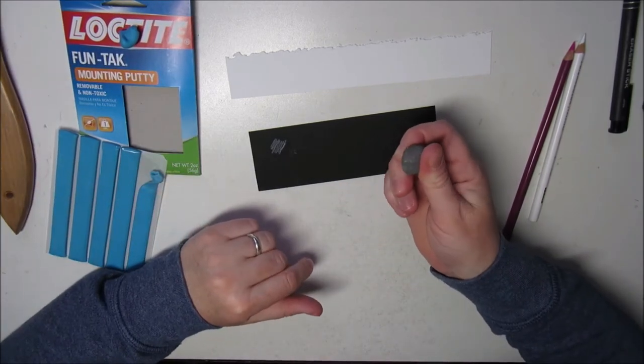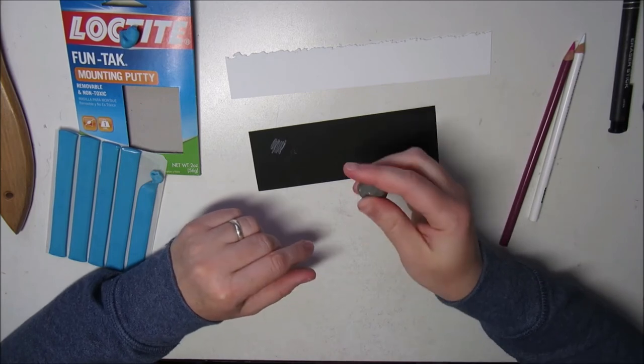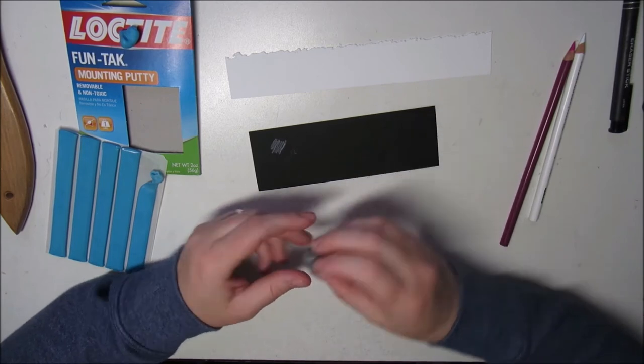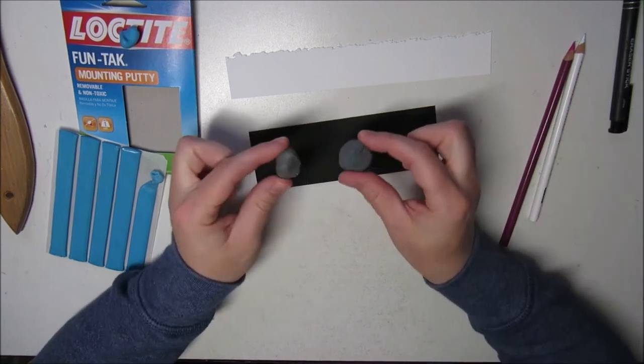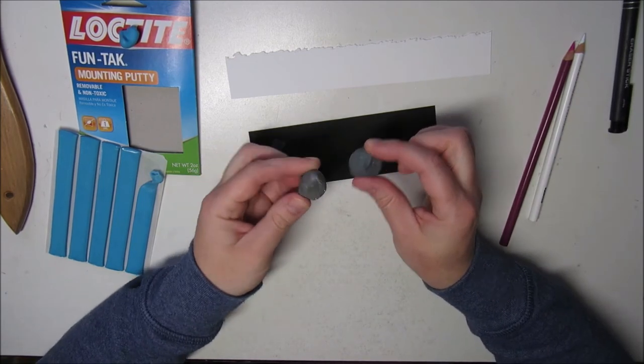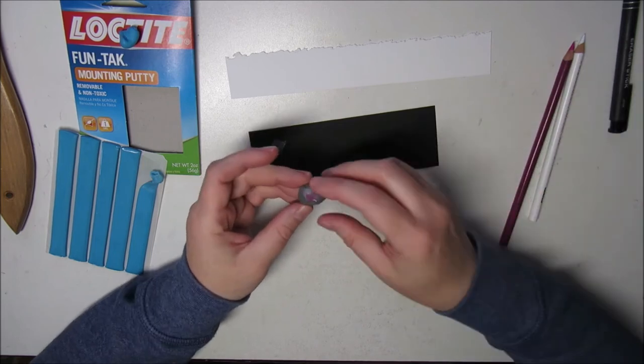So it's called Fun-Tak or Blu-Tak or you have different brands. This one used to be all white. I've used it a lot. And so now you can't tell it apart from my kneaded eraser, just to make sure that it's not the same size. That way I can't tell which one is which, but you can see it's very dirty.